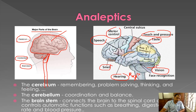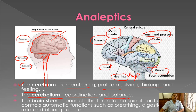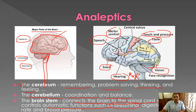The main functions are: the cerebrum helps in remembering, problem solving, thinking, and feeling. The cerebellum helps in coordination and balancing of the body. The brain stem connects the brain to the spinal cord and controls automatic functions such as breathing, digestion, heart rate, and blood pressure.